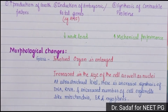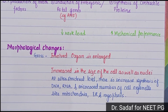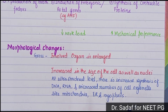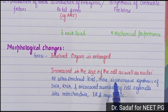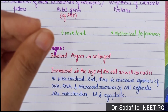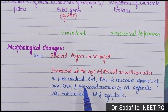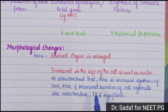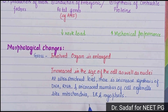Let's talk about the morphological changes. At the gross level, if we look at the organ, it will be enlarged — the size of the organ is increased. At the microscopic level, the size of the cell will increase, as well as the nuclei. There is an increase in the synthesis of DNA and RNA, and an increased number of cell organelles like mitochondria.